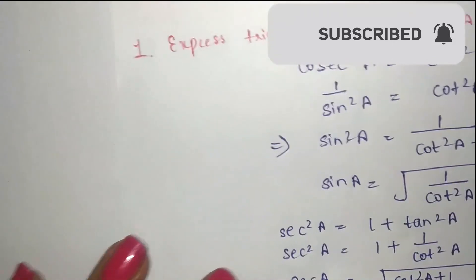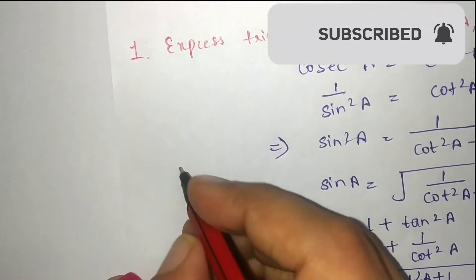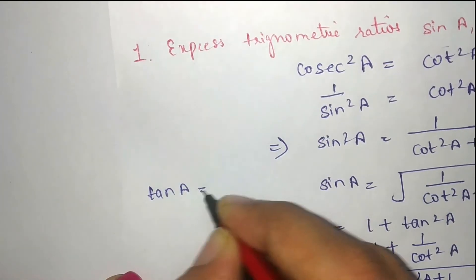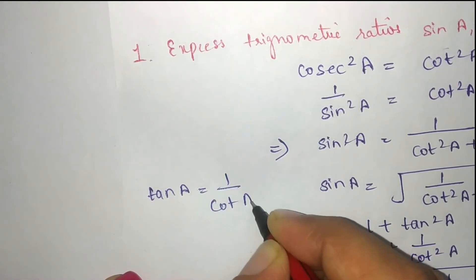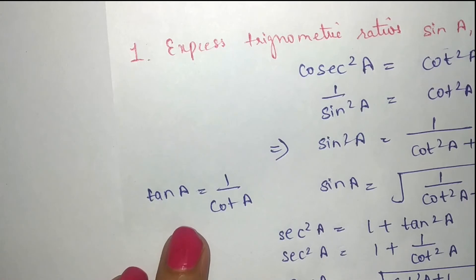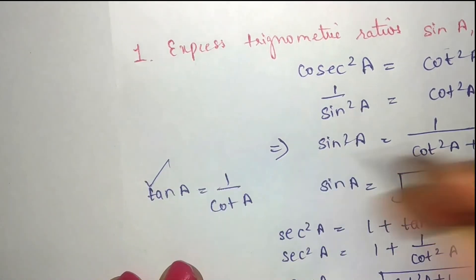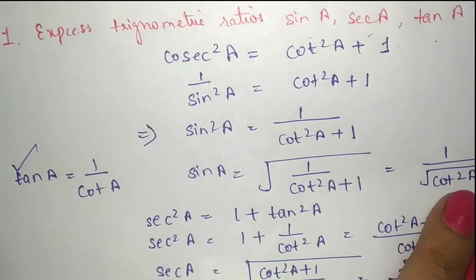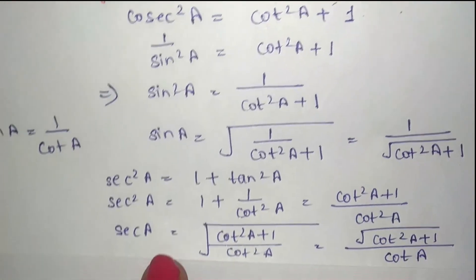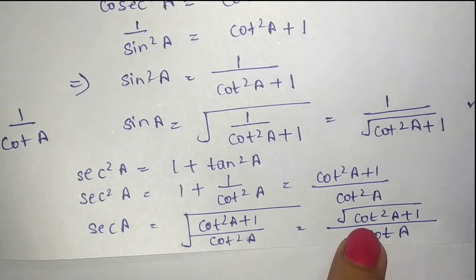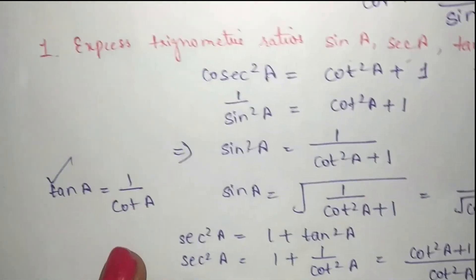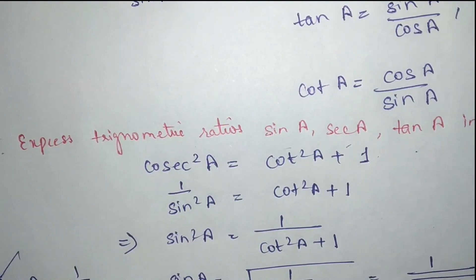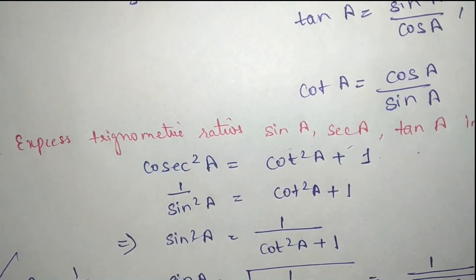Now the third value: tan a, which is simply 1 upon cot a. So our three answers are: sin a = 1/√(cot²a + 1), secant a = √(cot²a + 1) / cot a, and tan a = 1/cot a.